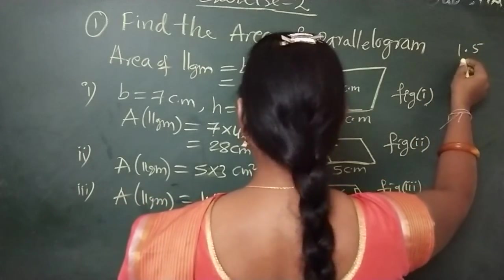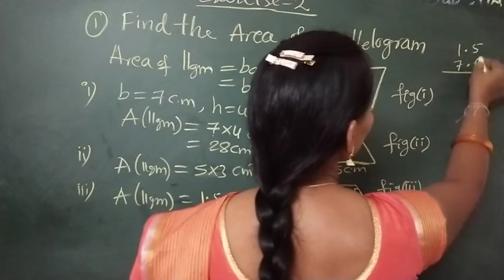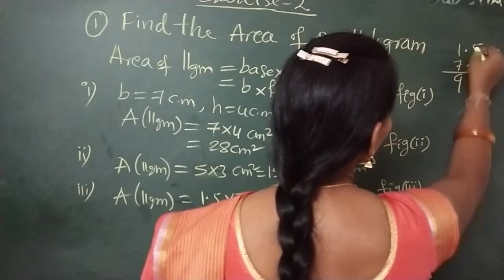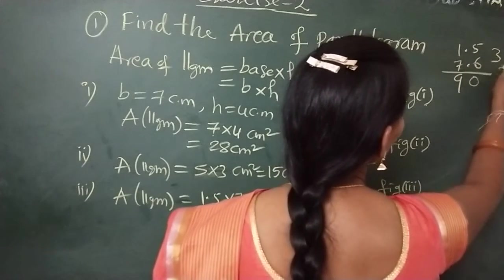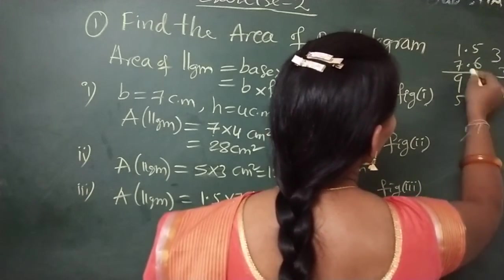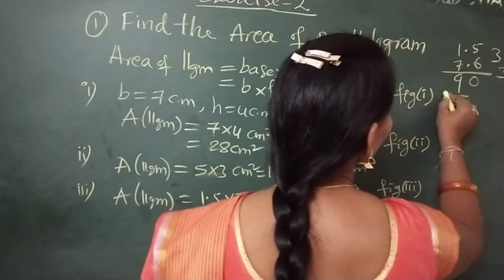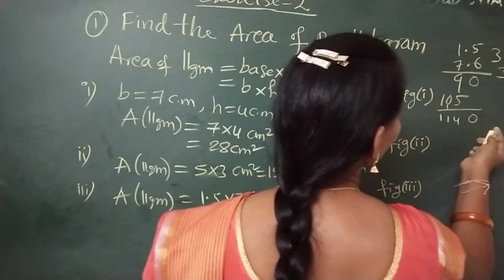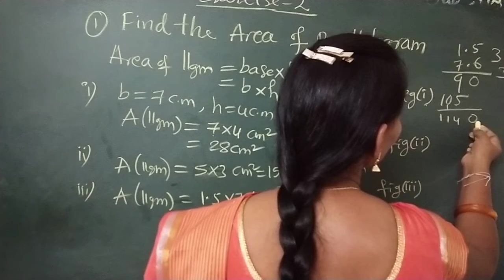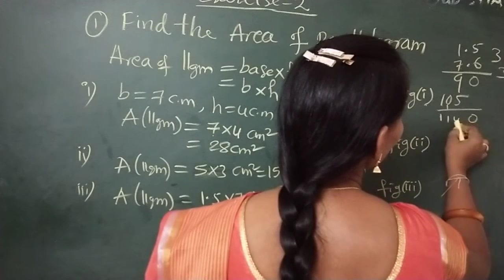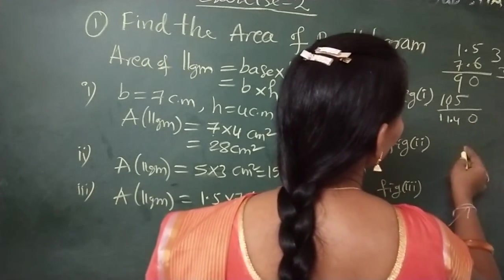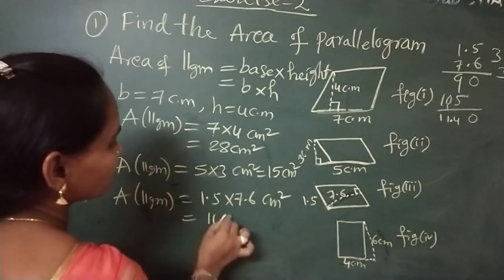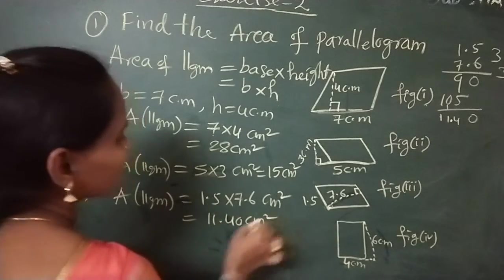Now you can multiply this - I am doing it here. You can multiply 1.5 times 7.6. Working through the multiplication: 35, then 7, carrying forward, gives us the result. Now, 2 digits after the decimal point - you can keep the decimal point at 11.4. So 11.40 centimeters square.